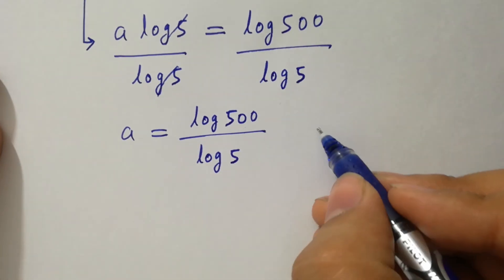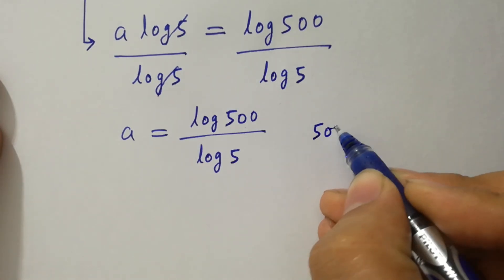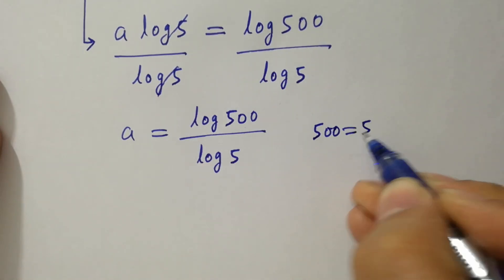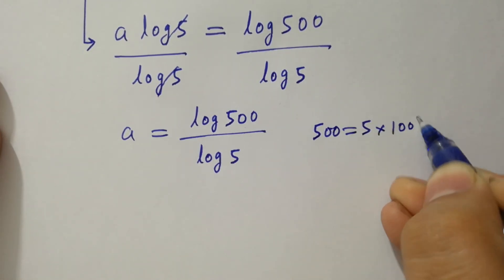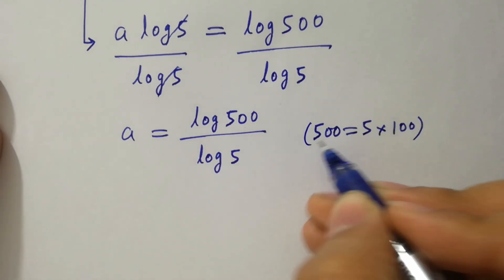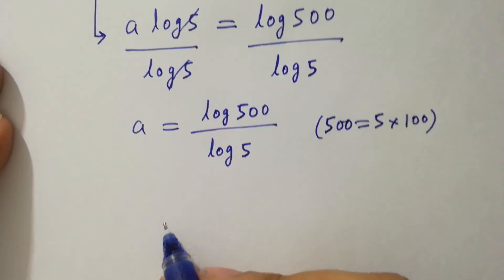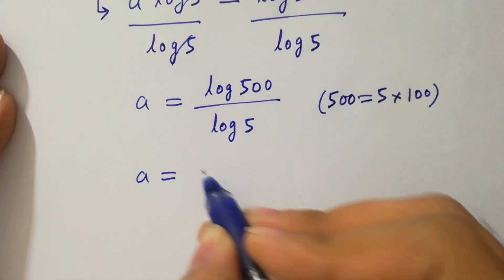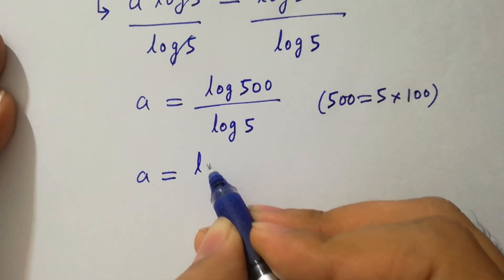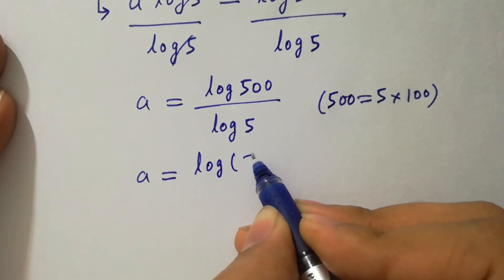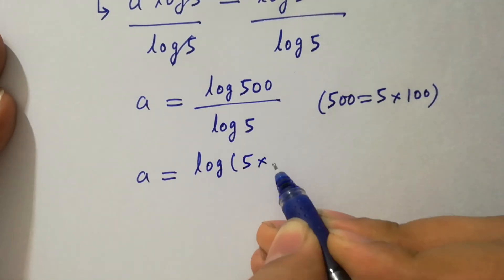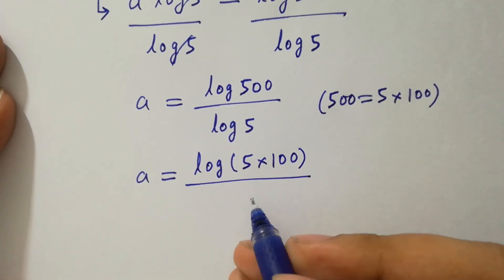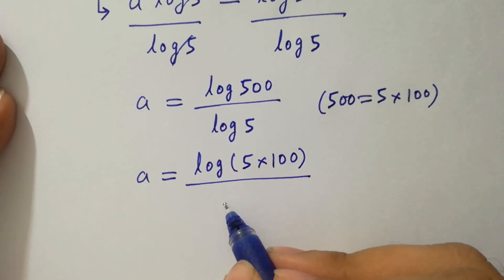Since 500 equals 5 times 100, a will be equal to log of 5 times 100, over log 5.